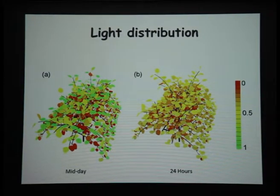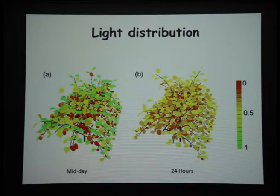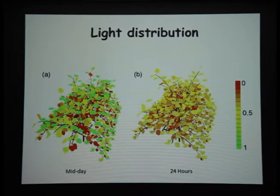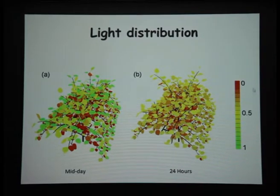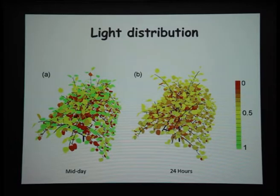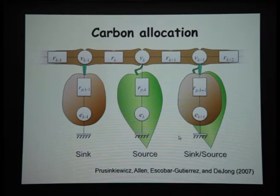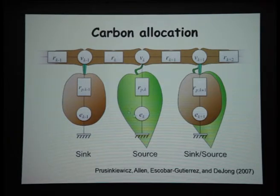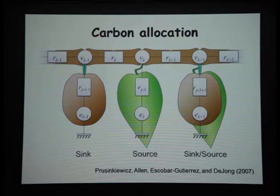As an example, light distribution: the physics of light is very well understood, so you can write a program that models the light in your system. The green components here are getting the full amount of light from overhead at midday, while the red ones are in the shade. We can also integrate light over 24 hours. Once we've got the light, we can look at leaves as sources — how much light went to each leaf, how much photosynthate was produced. There's a particular electrical analogy we use to allocate carbon between sources and sinks, depending on source-sink strength and the plant architecture.